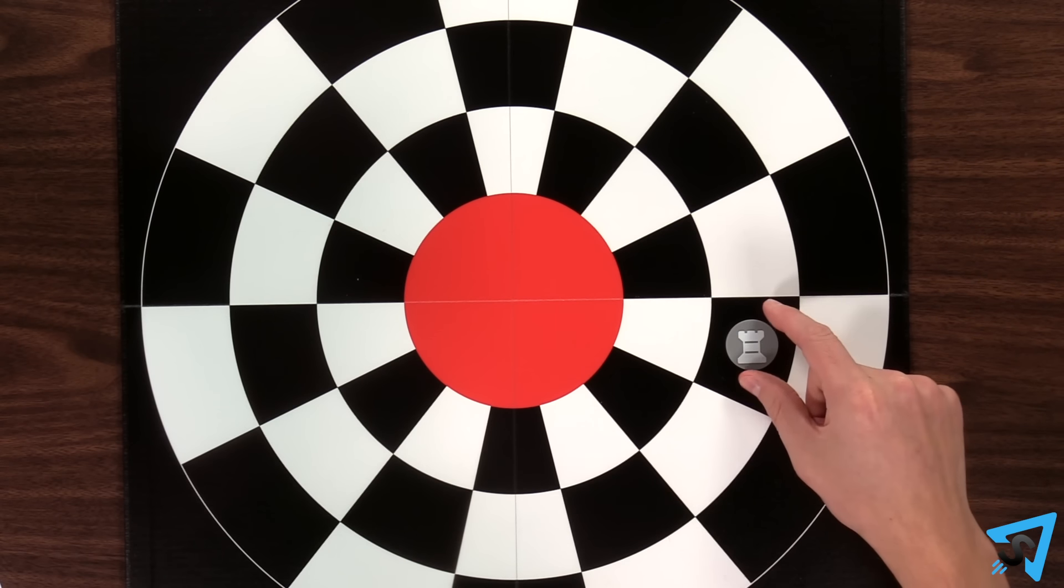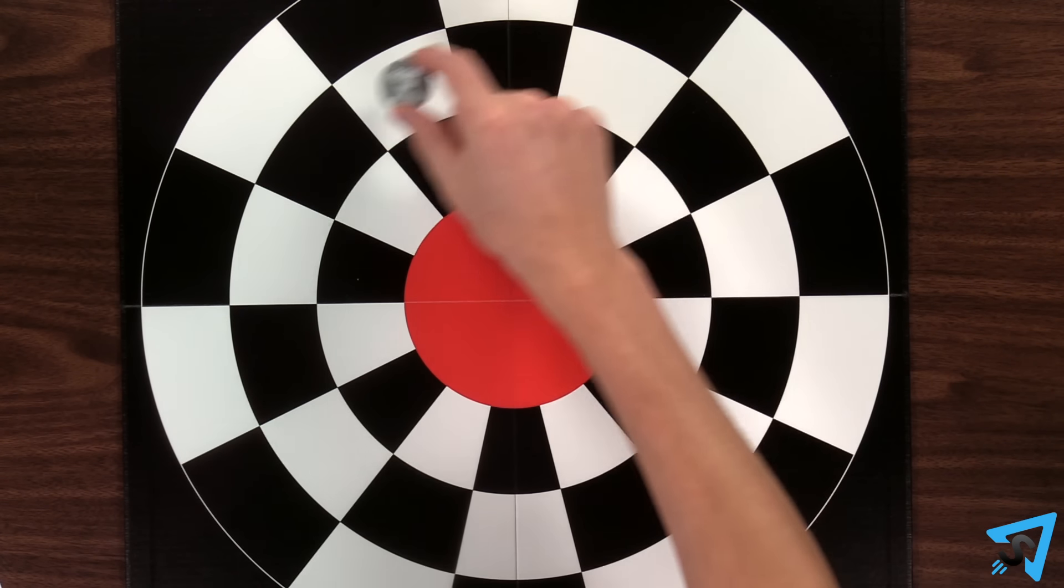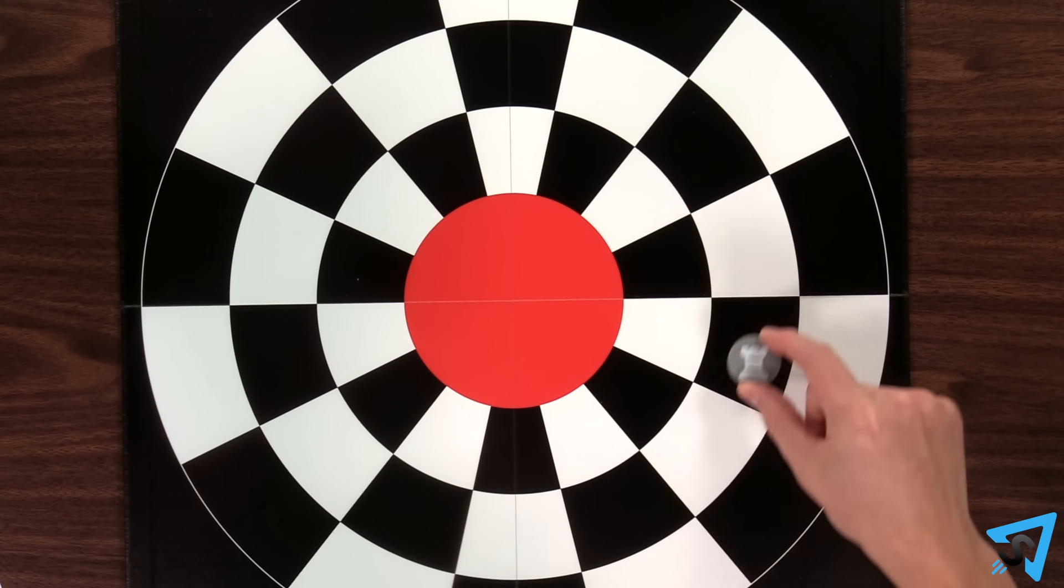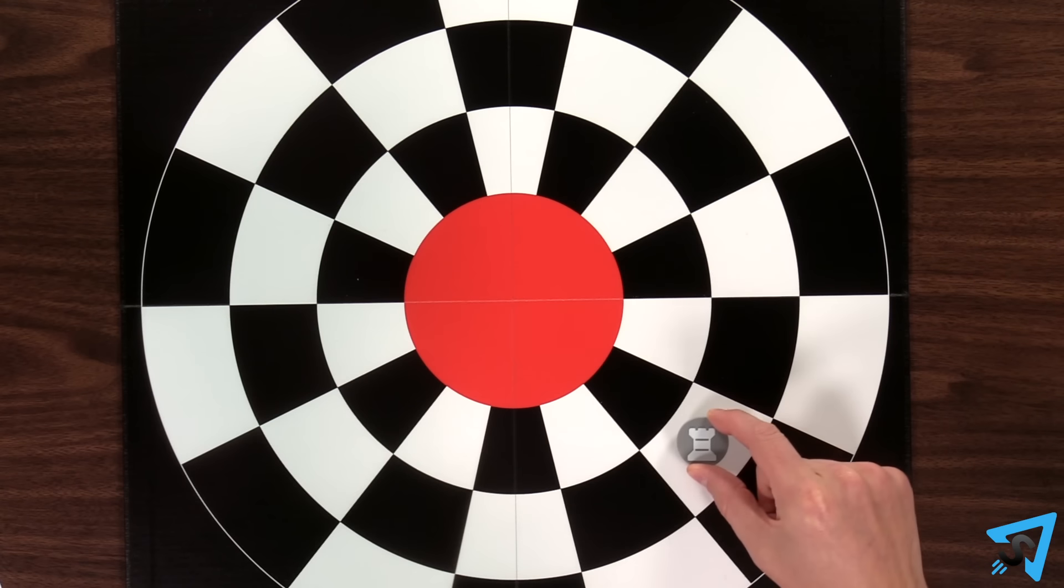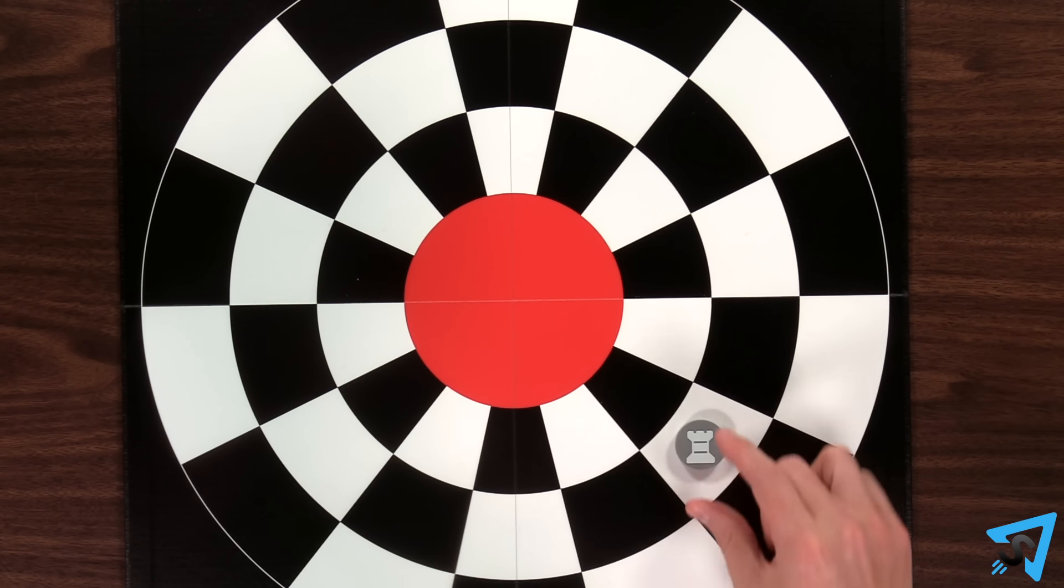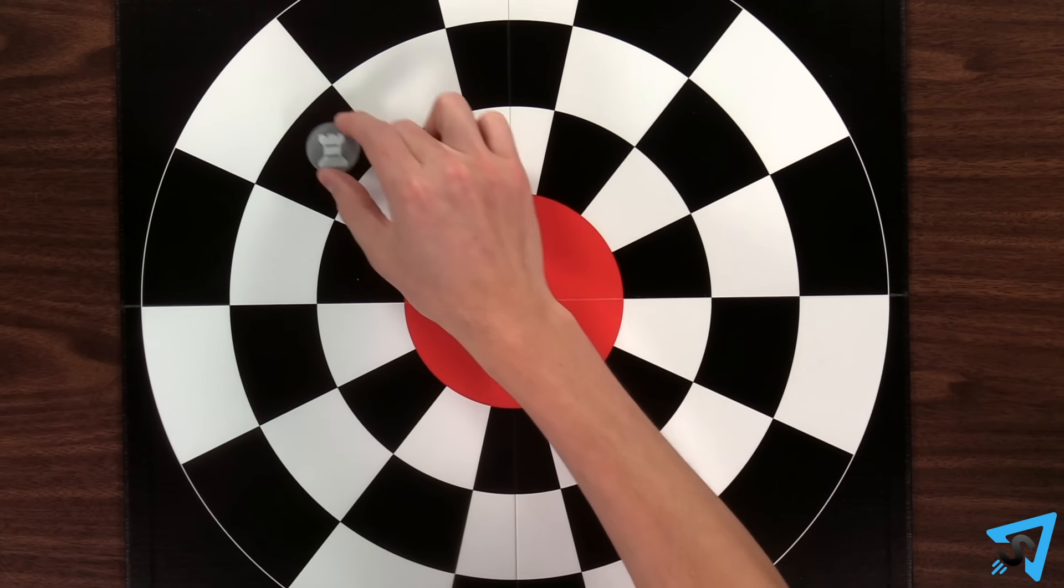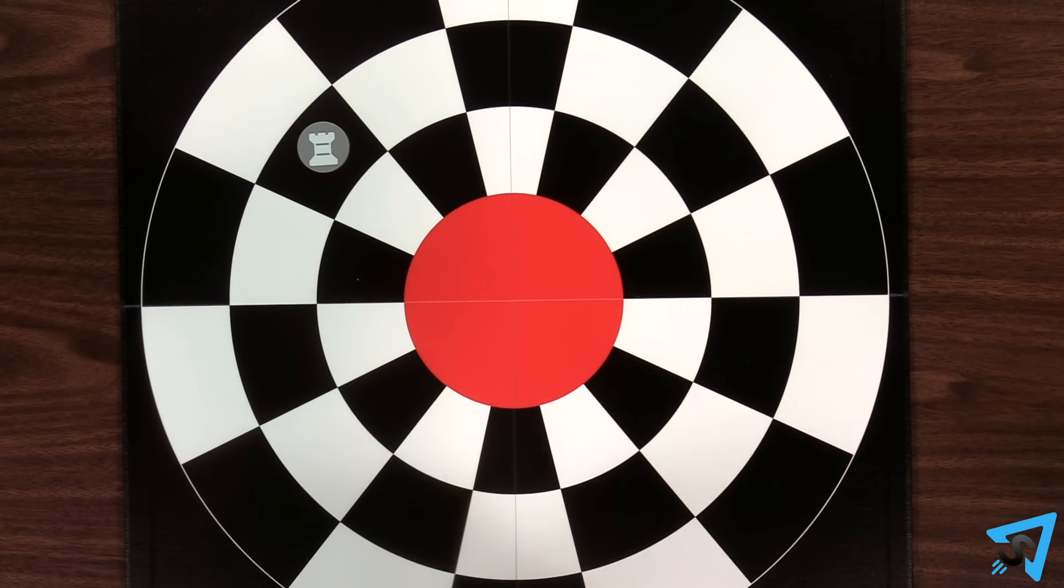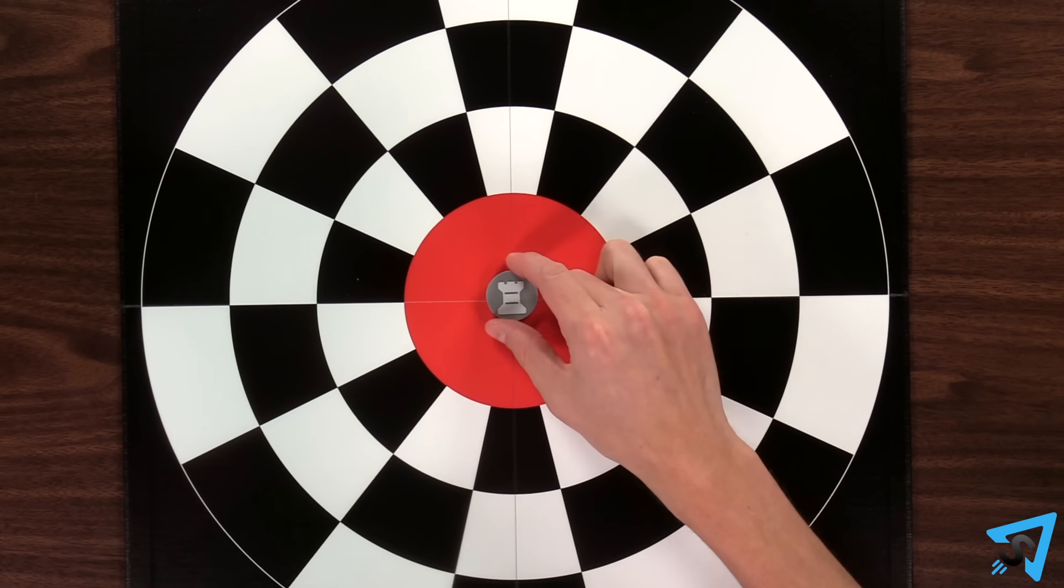Rooks can move laterally around the ring as many spaces as are available, but they may not end a move in the same space it started. The rook can travel through the center in a single move to a space on the opposite side, or it can stop in the center.